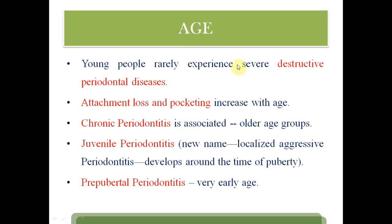The second host factor is age. We know periodontitis is a disease of old age, but there are certain diseases which can be seen at an early age also, like aggressive periodontitis. Commonly, attachment loss and pocketing increases with age. Older age presents chronic periodontitis, and juvenile periodontitis is also there. At very early age, you may see prepubertal periodontitis. Still, periodontitis is a disease that increases with age.